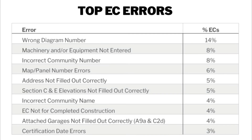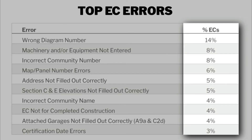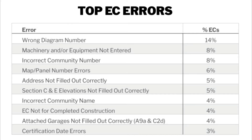Now that we've seen the various ways to correct an EC and when to use each, let's look at real-life situations by reviewing the top 10 EC errors and how to correct each one. The percentage in the ECs column shows how many of all ECs reviewed in 2019 showed each error. Your decision on which correction method to use may also hinge on how many ECs you have to correct and whether they are all from the same surveyor.